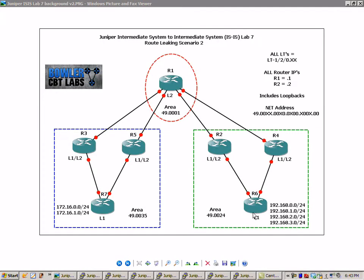But before we get too specific into what we're going to do in this video, let me explain our current network topology. We have 7 routers in this lab: router 1, 2, 3, 4, 5, 6, and 7. They are all logical systems and they're connected together via logical tunnel interfaces. If you're not familiar with those two terms, I would suggest watching logical systems labs number 1 and 2 on Juniper series 1. All the logical tunnels equal LT-120.xx, and I took out every single logical tunnel abbreviation in the network diagram just because it was too much to look at.